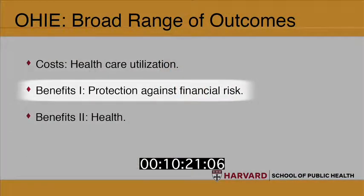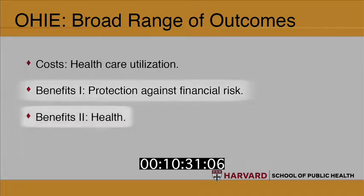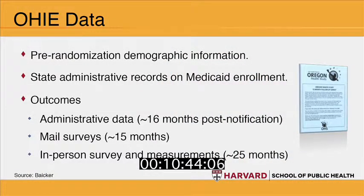On the benefit side, we're going to look at the financial protections that health insurance provides — do people fare better in their ability to pay bills, access to credit, and their credit reports. And of course we're going to look at health outcomes, both physical and mental health. To do that, we needed to collect a lot of data through the Oregon Health Insurance Experiment: hospital data, credit report data, emergency department data, and physical measures including blood pressure, cholesterol, diabetic blood sugar control, and obesity measures, as well as self-reported physical and mental health outcomes. I'll use that data, along with results from other studies, to give you a sense of what the evidence tells us about the costs and benefits of expanding public health insurance.